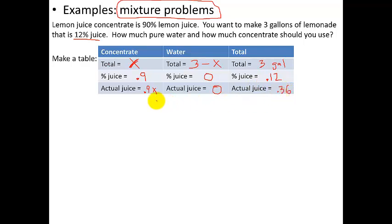All right. Now, none of the juice came from here. All of the juice came from here. So the 0.9x from right here, plus the 0 from right here, has to equal 0.36. So if I divide by 0.9, I get x equals 0.36 divided by 0.9. 36 divided by 9 actually goes in evenly. That's 0.4.